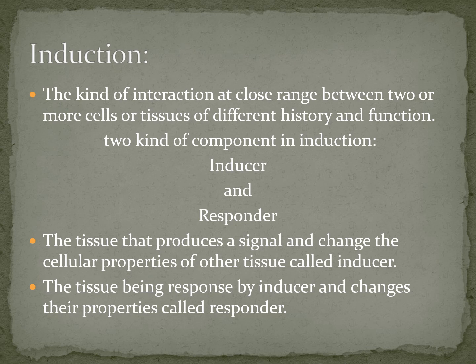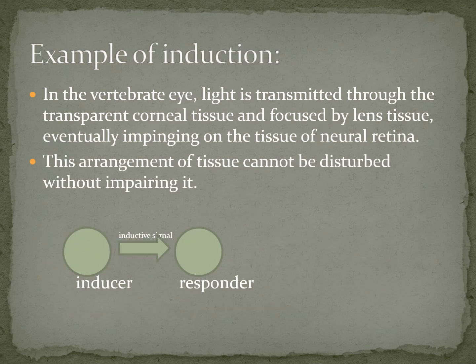Induction may occur in a group of cells, or in a specific region or specific cells. There are two kinds of components in induction: first is the inducer, and second is the responder. The tissue that produces a signal and changes the cellular properties of other tissues is called the inducer. The tissue being responded to by the inducer and changing its properties is called the responder.